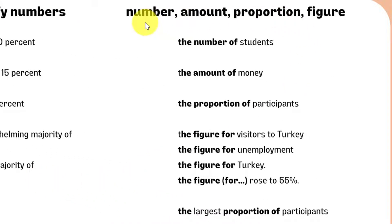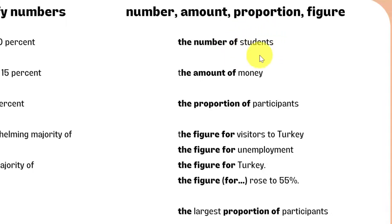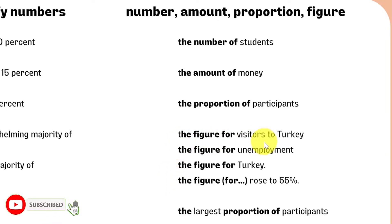Test-takers often have difficulty using the words 'number,' 'amount,' 'proportion,' and 'figure.' The examples shown demonstrate how to use them correctly. 'The number of' is followed by a plural noun. An uncountable noun is used after 'the amount of.' 'The proportion of' is followed by a plural noun. Use 'the figure for' with a plural noun, uncountable nouns, countries, and percentages.